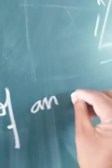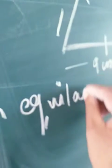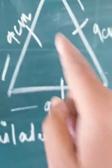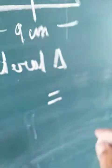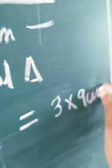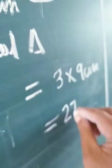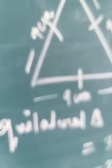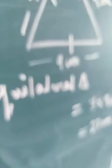Now we have to get the perimeter of this equilateral triangle. For an equilateral triangle, instead of writing 9 plus 9 plus 9, we write 3 times 9 centimeters, which gives us 27 centimeters. So this is the solution of sum number b.